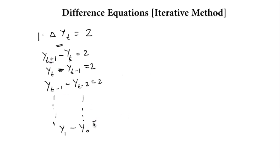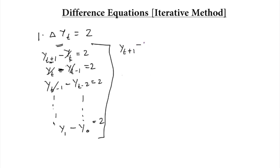That is, yt+1 minus yt is equal to 2. If we add all these equations, all the preceding terms will cancel off. The equation that we will get is: yt+1 minus y0 is equal to t times 2, plus one additional 2 for this t+1 pivot. This equation can be rewritten as yt+1 is equal to y0 plus 2 times (t+1).